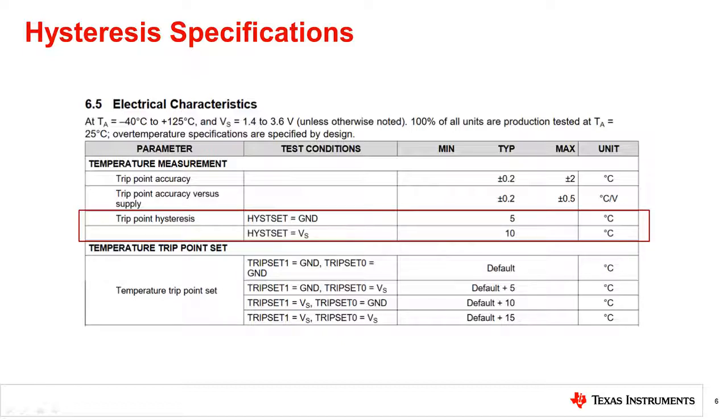For this device, the width of the band is set based on the pin hysteresis. When connected to the supply voltage, it provides a 10 degrees Celsius hysteresis. However, when connected to ground, it provides a 5 degrees Celsius hysteresis band.